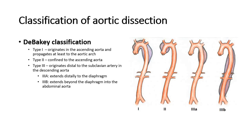The first is the DeBakey classification, where it is classified into three types. Type 1 originates in the ascending aorta and propagates at least to the aortic arch. Type 2 is confined to the ascending aorta. Type 3 originates distal to the subclavian artery in the descending aorta. Type 3 can be further subdivided into 3a, which extends distally to the diaphragm, and 3b, which extends beyond the diaphragm into the abdominal aorta.